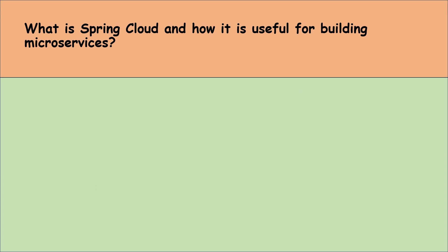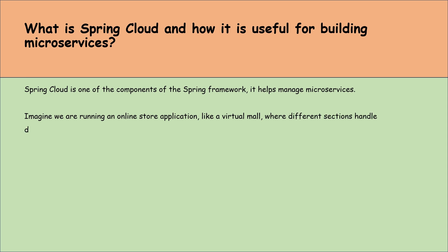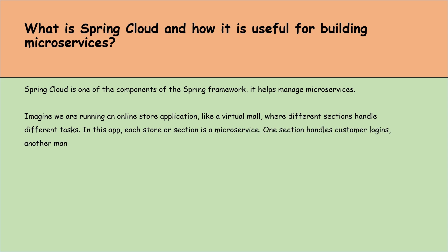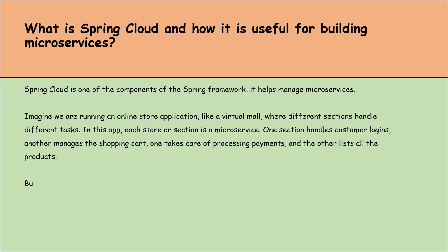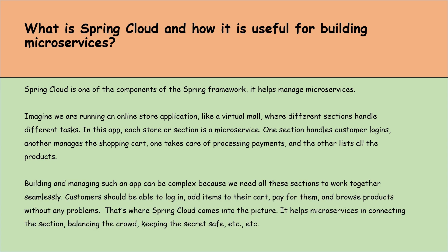What is Spring Cloud and how is it useful for building microservices? Spring Cloud is a component of the Spring framework that helps manage microservices. Imagine running an online store application like a virtual mall where different sections handle different tasks — each section is a microservice: one handles customer login, another manages the shopping cart, one processes payments, and another lists products. Building and managing such an app can be complex because all sections must work together seamlessly. That's where Spring Cloud comes in — it helps microservices connect, balance load, keep secrets safe, and more.